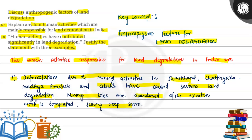In Jharkhand, Chhattisgarh, Madhya Pradesh and Odisha, where there are many mines, mining has led to significant land degradation.